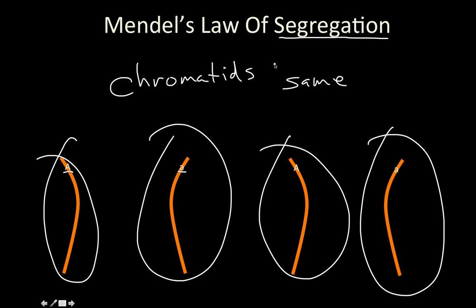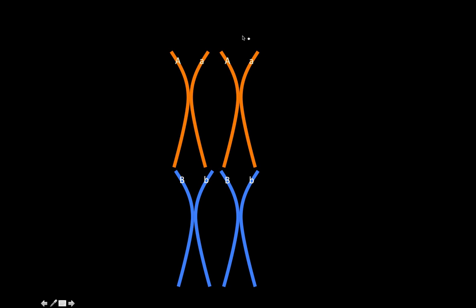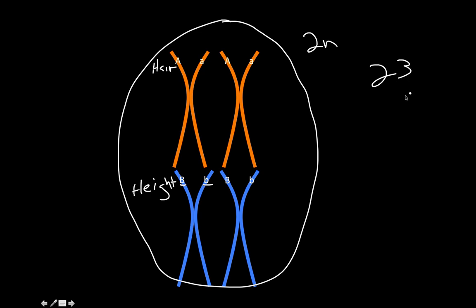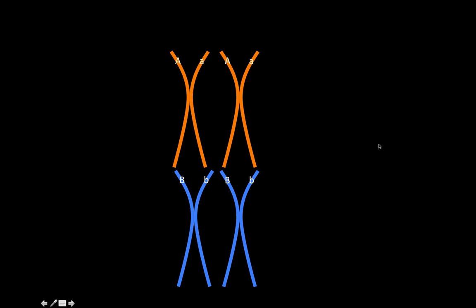Chromatids from the same chromosome separate into different gametes — that's Mendel's law of segregation. I'll show you why I want to say 'chromatids' rather than 'genes and alleles' a little bit later. For the next law, we still start with a diploid cell — two copies of the orange chromosome, two copies of the blue chromosome. We have our hair color alleles here, and on the blue chromosome are alleles for the height gene: short allele and tall allele.